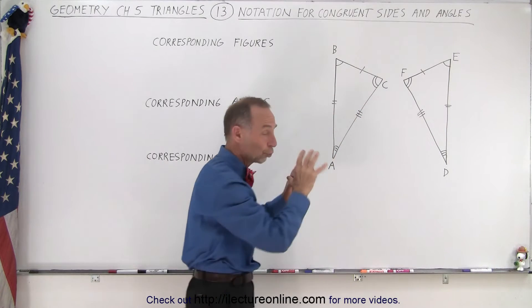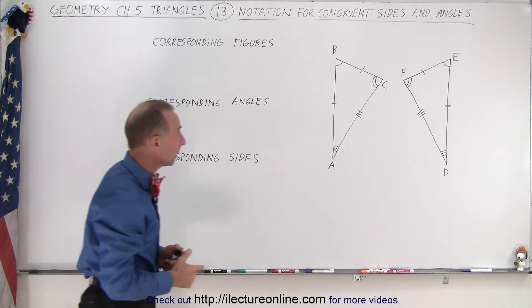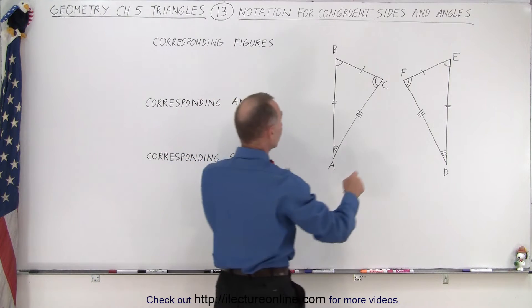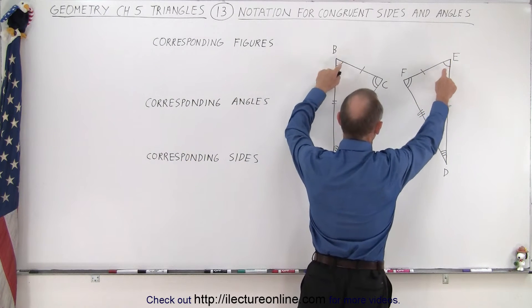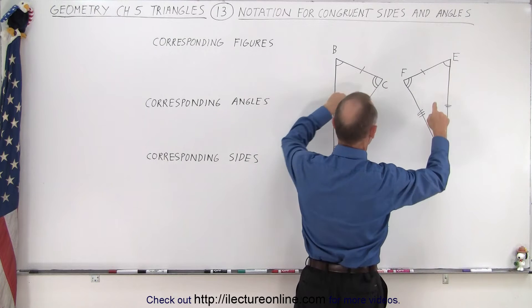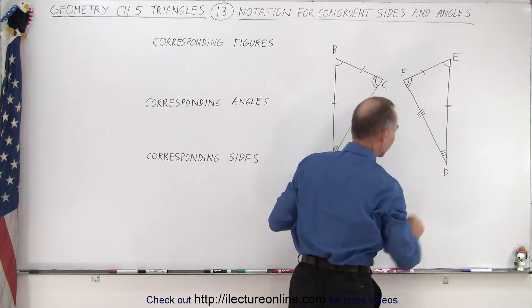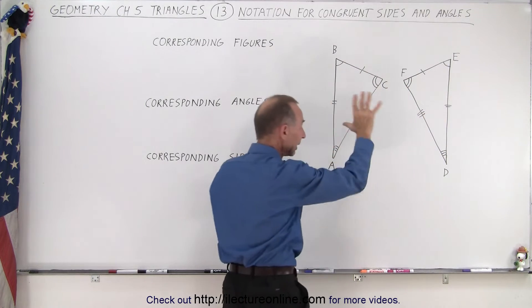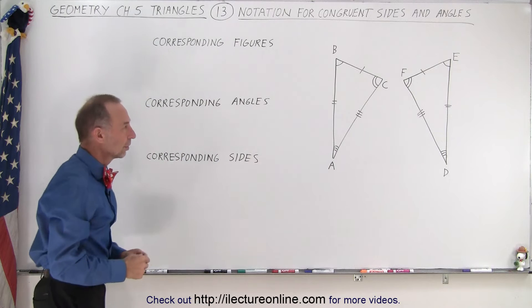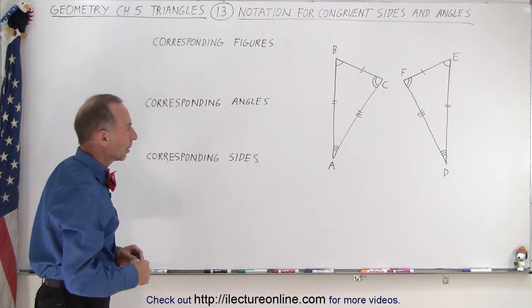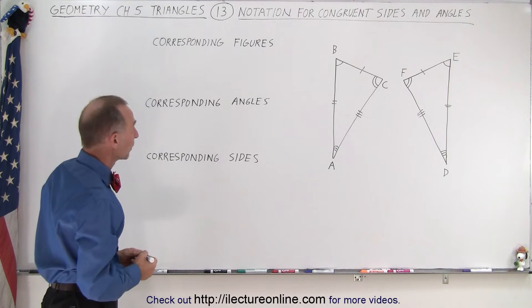So those corresponding sides have the same length. With the angles, notice both of these have one little curved line, here we have two curved lines, and here we have three curved lines — again indicating that those corresponding angles have the same angular measure and therefore are congruent.